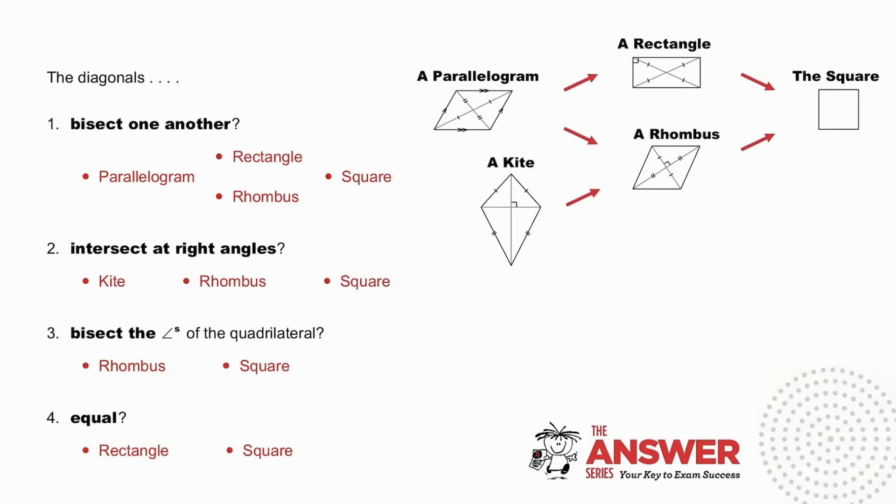The diagonals bisect one another in a parallelogram, and therefore in a rectangle, a rhombus, and a square. They intersect at right angles, in a kite, and therefore in a rhombus and a square. They bisect the angles of the quadrilateral, in a rhombus, and therefore also in a square.